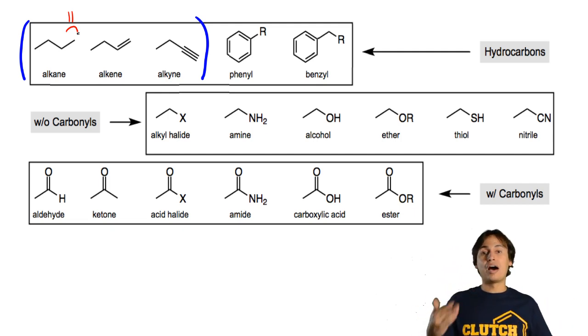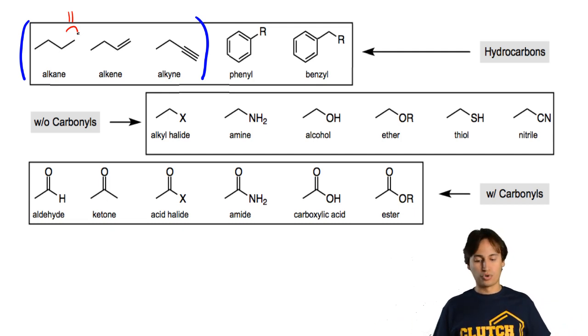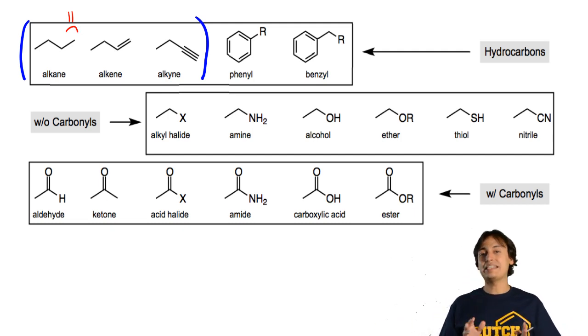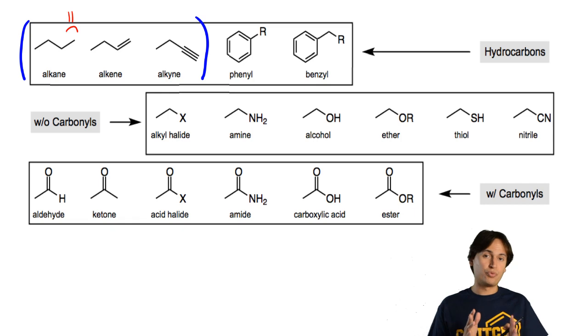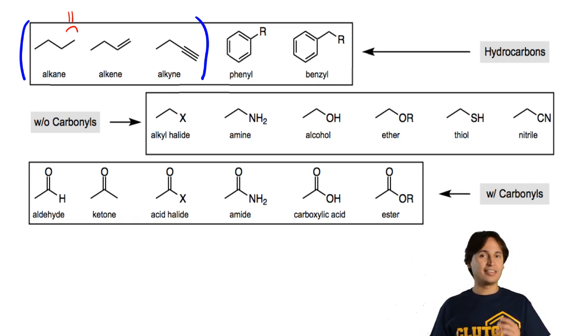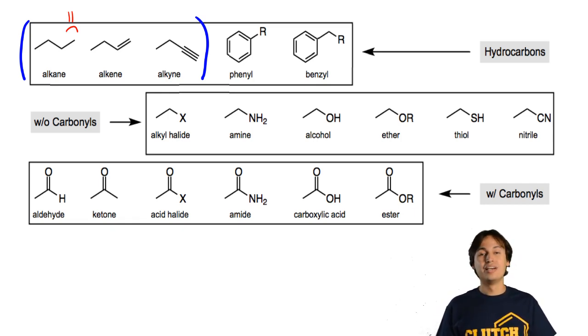So that would not actually be considered a functional group. Also, recall that whenever you see a six-membered ring with alternating single bonds and double bonds, like the Clutch logo, that's called a benzene ring.